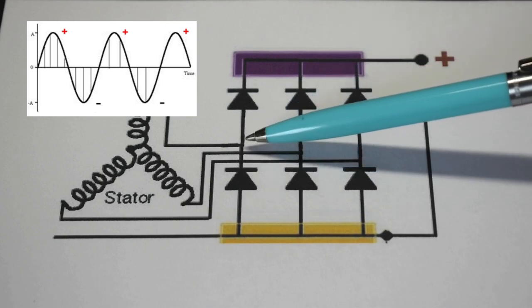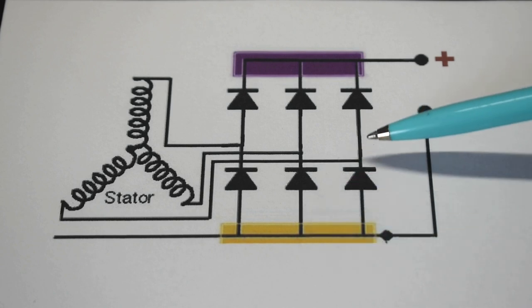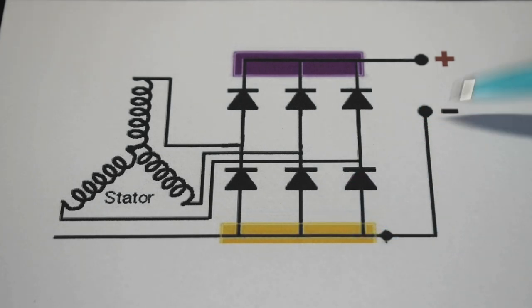And over here only the negative peaks are going to pass to the lower rail where the negative is. The power output from all three phases then goes into the voltage regulator which I showed you. And then before it leaves the unit you have a capacitor across the output that's going to smooth out any ripples in the direct current.